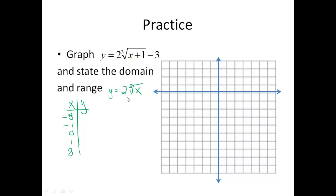When I plug negative 8 into my equation, I have 2 times the cube root of negative 8. The cube root of negative 8 is negative 2, and 2 times negative 2 is negative 4. A similar process with negative 1 gives negative 2. When I put 0 in, I get 0 back. Positive 1 gives me 2, and positive 8 gives me positive 4. Now I go ahead and plot those points on my graph.